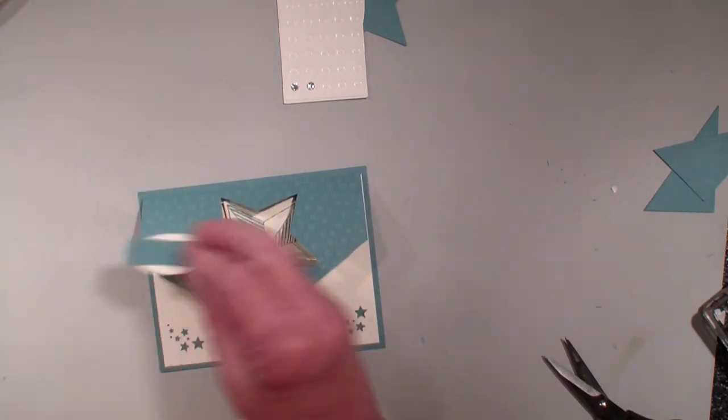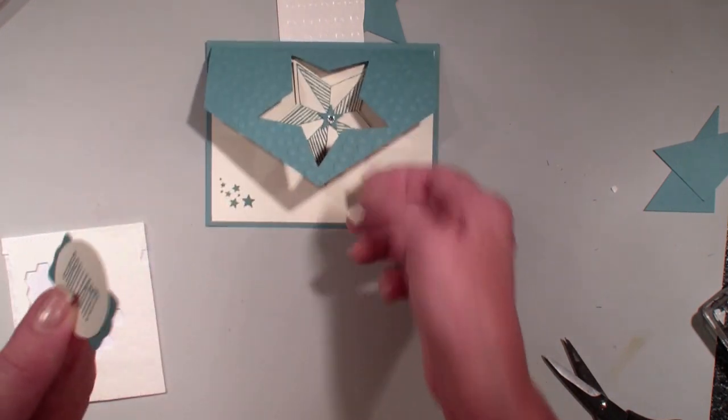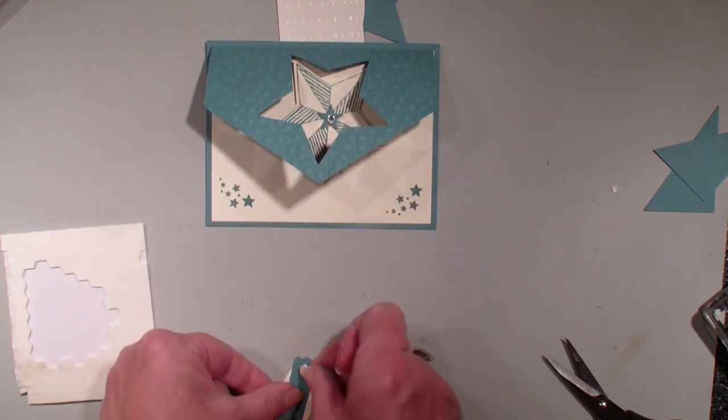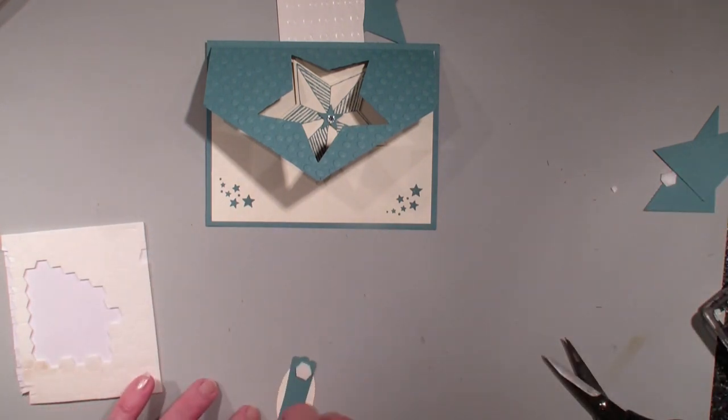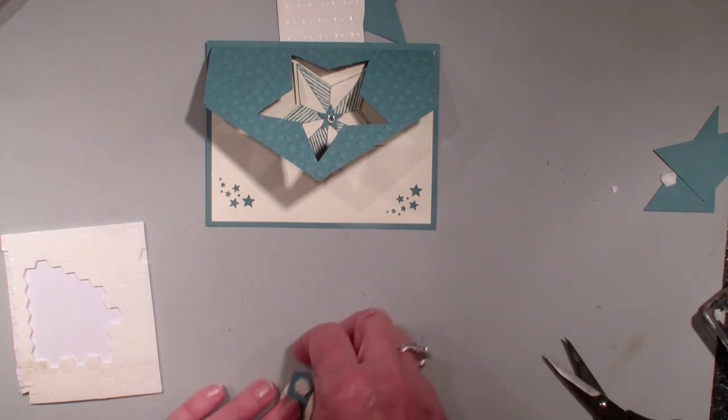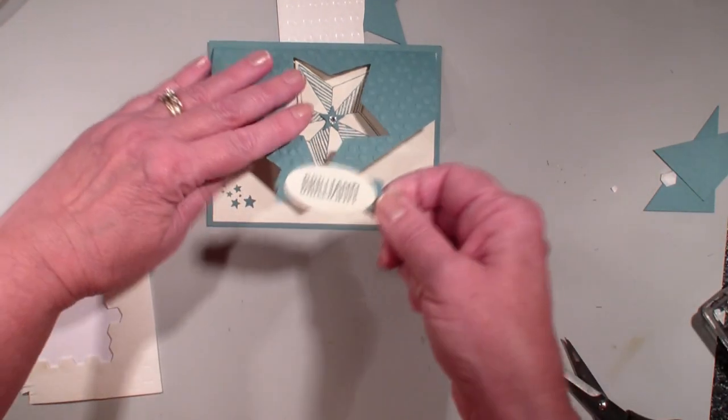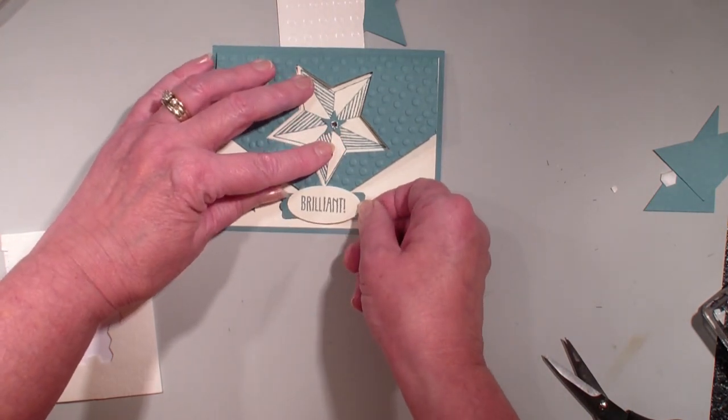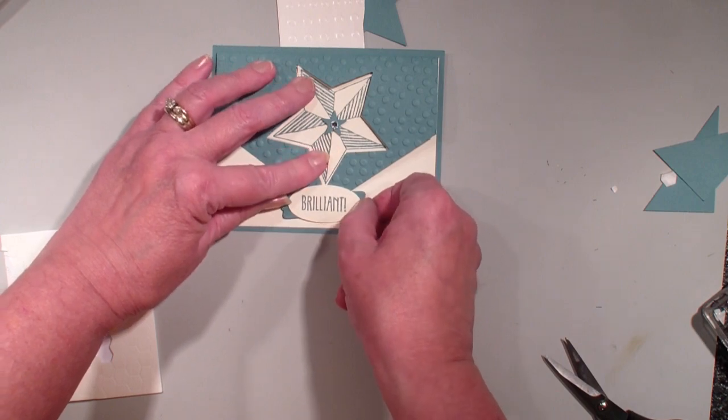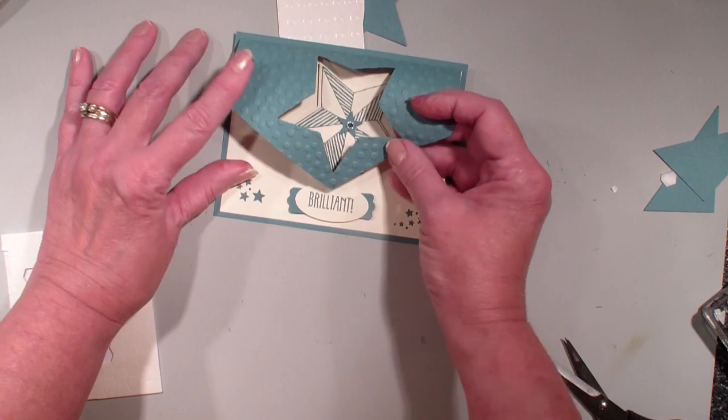Now in order to secure that flap down, I'm going to take two dimensionals. I've already used the Brilliant, again this is from the stamp set Be the Star. I have punched that out with a large oval, then I took the modern label and used the Lost Lagoon just for a nice background to that punch. And I just want to make sure that I put it far enough up there so that that has something to hold on to.